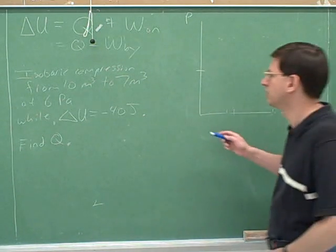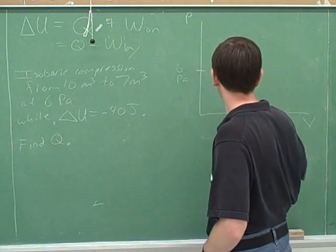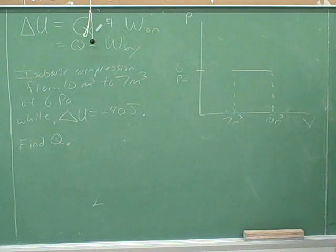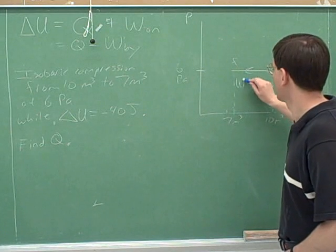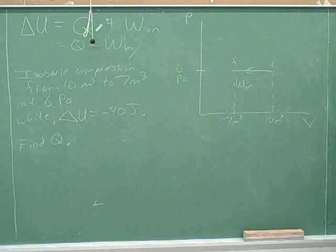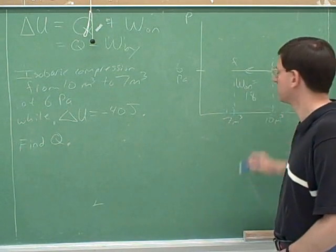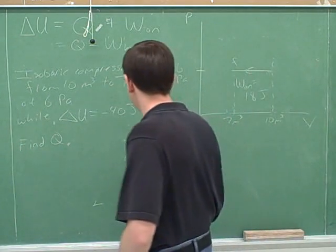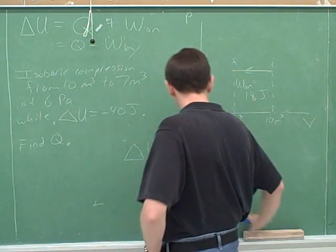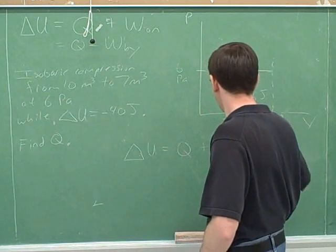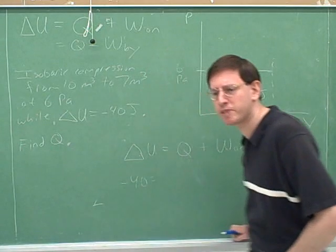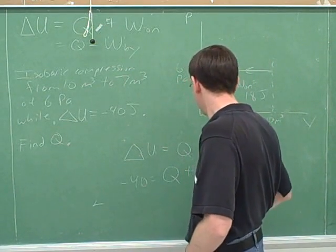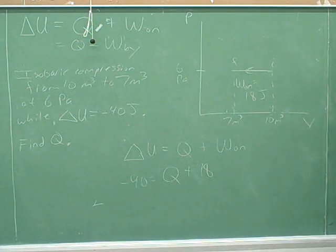So we have coordinates 6 and 7, and 6 and 10. Good. There's a decrease in the volume, so it's work on. Good. Good. Speak up a bit, please. Sorry. Negative 40 equals Q plus 18. Sounds good. So, Q is equal to negative 58. Excellent.